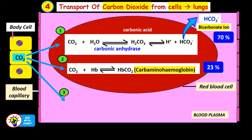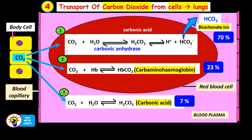The third method of transport of carbon dioxide is in the blood plasma. Carbon dioxide diffuses into the blood plasma and dissolves, combining with water to form carbonic acid, H₂CO₃ — the same compound as before, but this time it is in the blood plasma, not in the red blood cell. 7% of carbon dioxide in the blood is transported as carbonic acid in the blood plasma. To summarize, the three ways carbon dioxide is transported from cells to lungs are: as bicarbonate ions, as carbaminohemoglobin, and as carbonic acid.